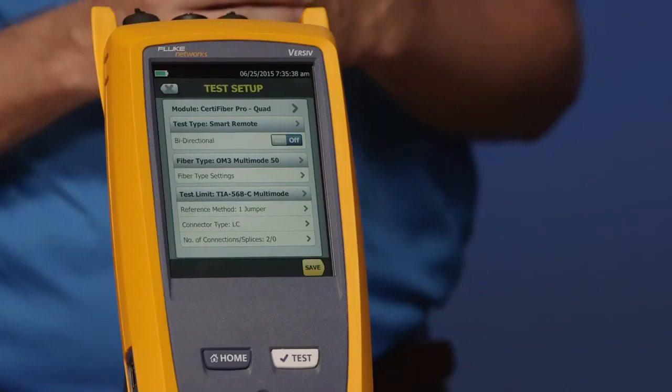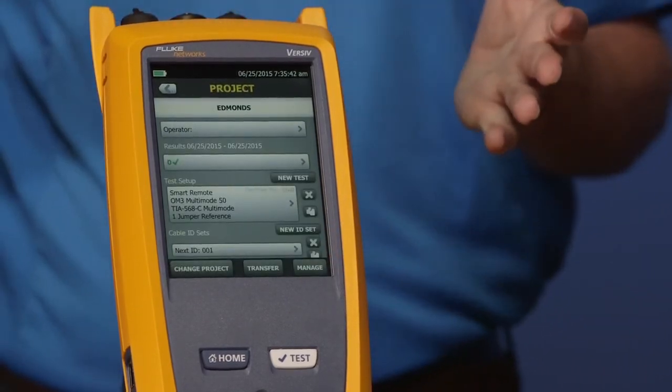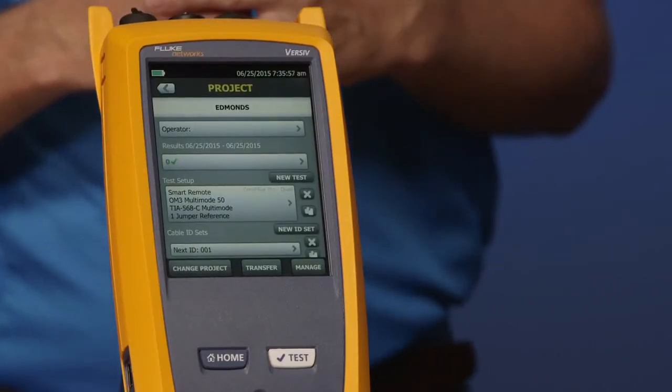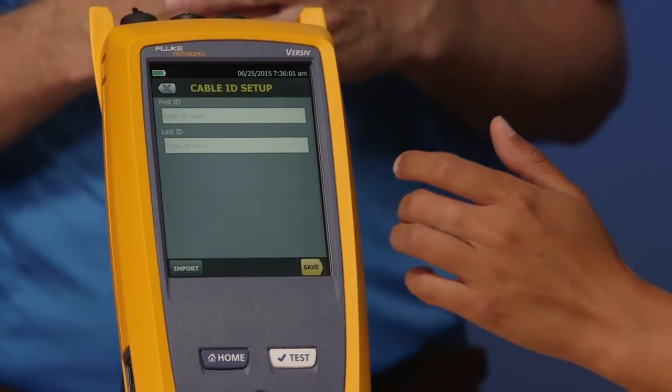All right. That's our setup for fiber testing. So with that said, go ahead and tap save for me, Amanda. And that's our test setup configuration done. Just one more thing that we want to do. We want to pre-configure our cable IDs because we know from interviews with contractors, having to rework the cable IDs back in the office is something that happens very commonly. So go ahead and tap new ID for me.